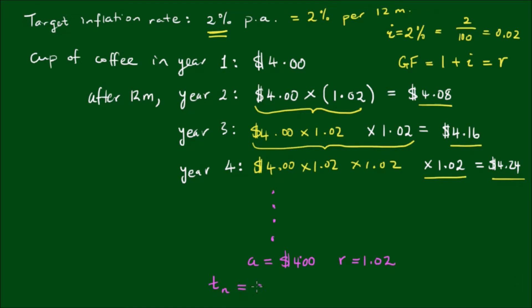We learned in the last post that to get any term of the geometric sequence, the nth term, is simply equal to a by r to the n-1. So in year four, which is T4, we indeed have $4 multiplied by 1.02 to the power of 4 minus 1. So 4 minus 1 equals 3, and if we plug this into a calculator, we should indeed get $4.24.